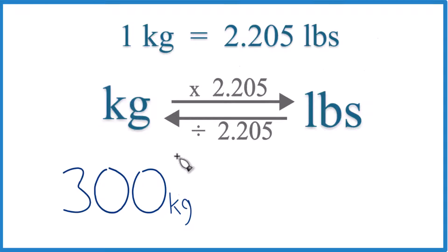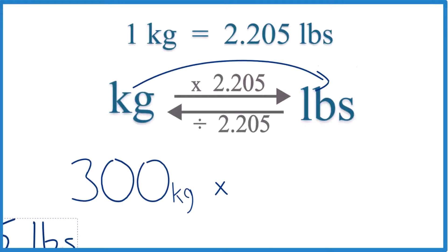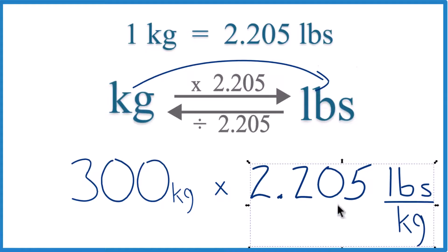In this case, we're going from 300 kilograms to pounds. So we are going to multiply by that 2.205 number there, our conversion factor. And that's 2.205 pounds per kilogram. That comes from our conversion factor.